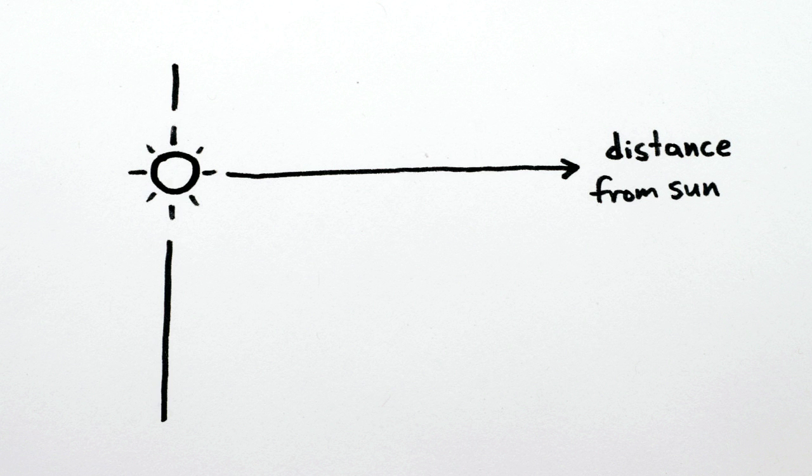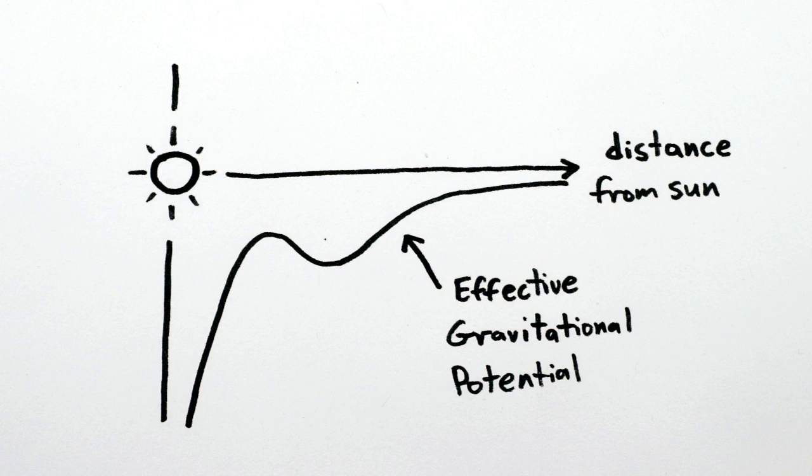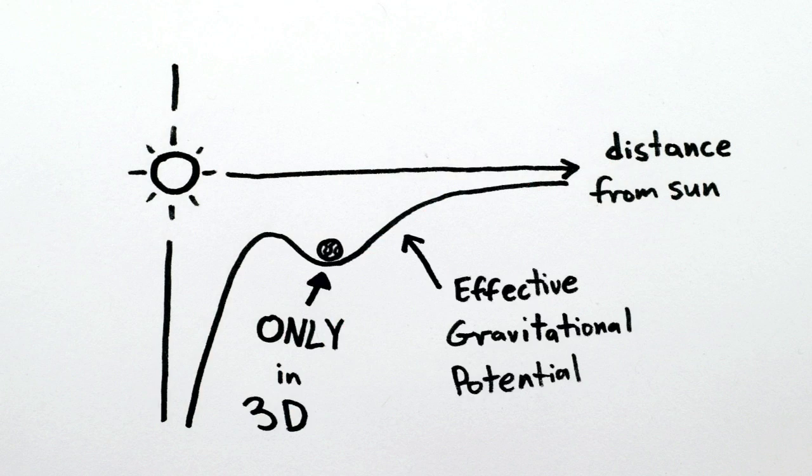This balance is very special indeed. It's highly dependent on the strength of the gravitational force and the number of dimensions we live in, and in fact, these stable orbits only exist in a three-dimensional universe.